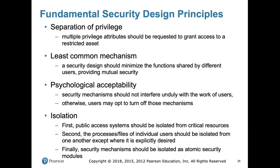The next principle is separation of privileges. You must have multiple separated privileges in order to grant access to a restricted asset. Don't use a single privilege or single factor to authenticate people — ask for multiple things and rely on multiple factors. For example, many sites require both a username and a password: the username itself is a privilege, and an authenticated user needs to know both username and password to gain access.